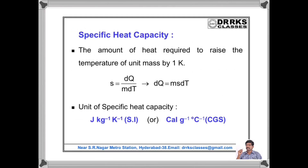Specific heat: the amount of heat required to raise the temperature of a unit mass by 1 degree centigrade or Kelvin is called specific heat capacity. Its formula is S = DQ/(M·DT), where DQ = M·S·DT. Its unit is Joule per kg Kelvin or Calorie per degree centigrade per gram.